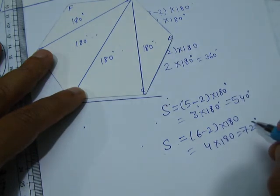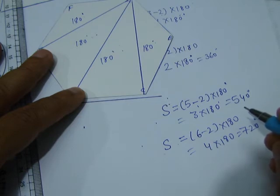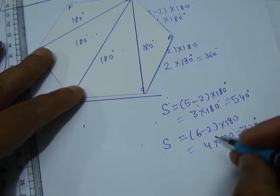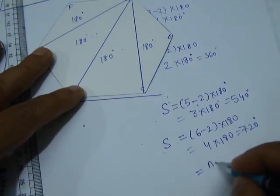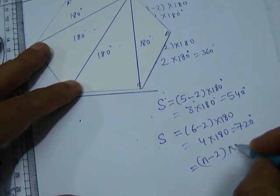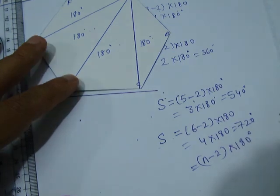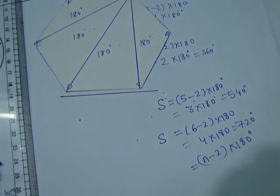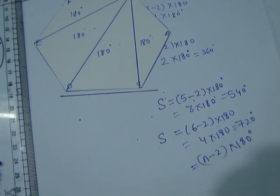In this way, we have concluded that the sum of the interior angles of a polygon of n sides is (n - 2) × 180 degrees. In this way, we can show and verify that the sum of the interior angles of a polygon is (n - 2) × 180 degrees.